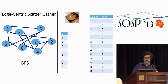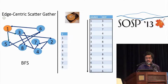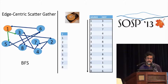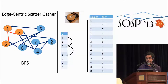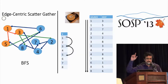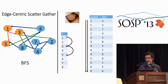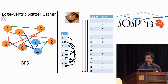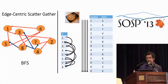Starting from vertex one, rather than accessing just the edges out from vertex one, we scan the entire edge list. Vertex one has an update to send out, so we send updates along that, then gather into vertices three and five. For the next step, we again scan the entire edge list and find that vertices three and five have work to do, scatter along those edges, and so on. We finish the entire scatter-gather computation using four sequential scans over the edge list, rather than all the random access we were doing before.